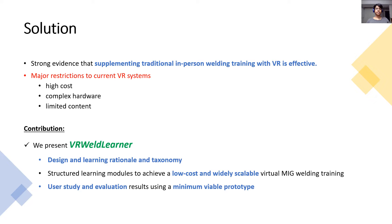The contribution of the work lies in the design and development of the training system to make welding training accessible to end users. We present VR Weld Learner, a system design that systematically breaks down welding and provides a learning rationale and taxonomy extracted using the backward design approach in learning sciences. We provide a design framework consisting of structured learning modules to achieve a low cost and widely scalable virtual metal inert gas welding training. Finally, we conduct a user study with 24 welding novices to validate the system's usability and evaluate user experience and performance using a minimum viable prototype.